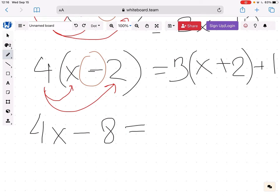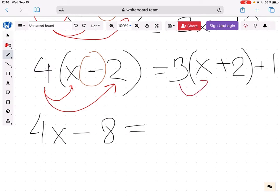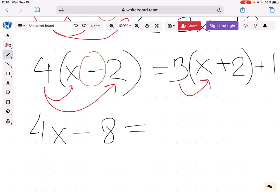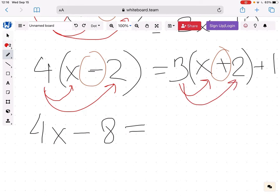On the right-hand side, I'm going to have 3 times x. Then I'm going to have plus. And then I'm going to have 3 times 2. So we get 3x plus 3 times 2, which is 6, plus 1.